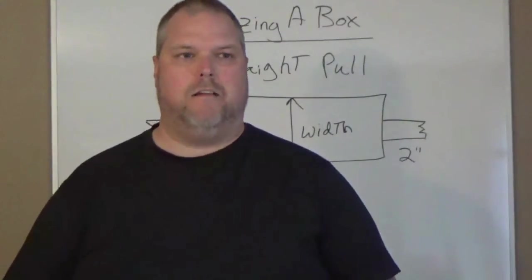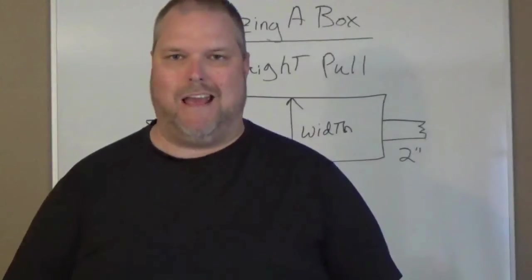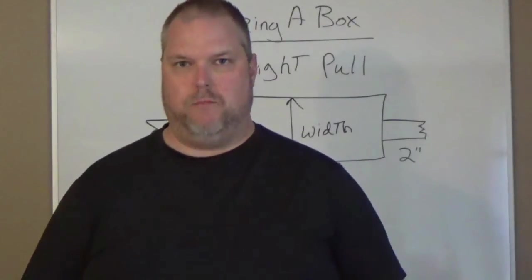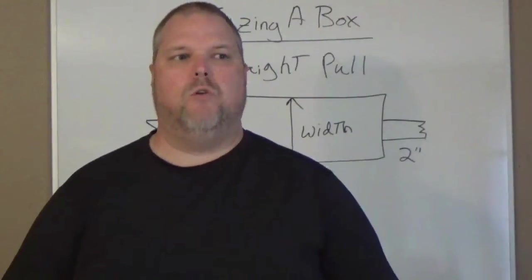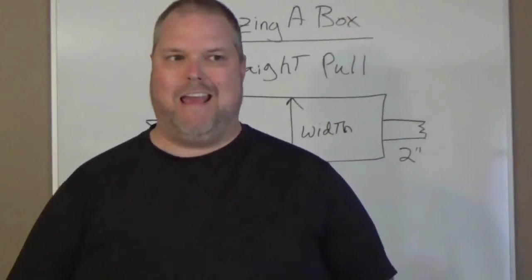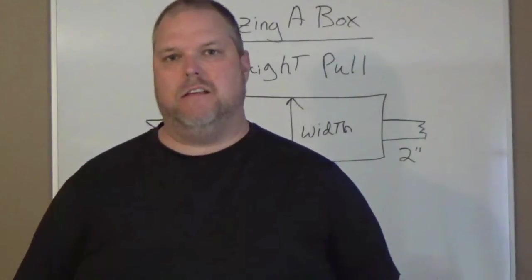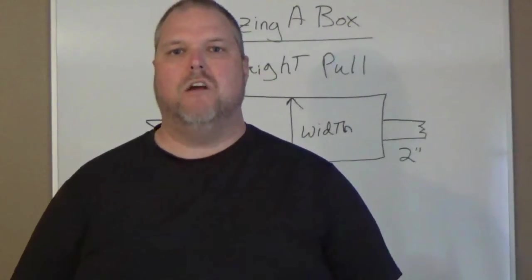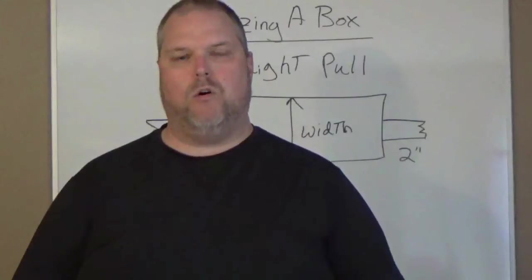According to the NEC, article 314.28 states junction boxes for straight pulls and angle pulls. 314.28A basically is telling us that this is what we have to use to size a junction box for a number 4 or larger.